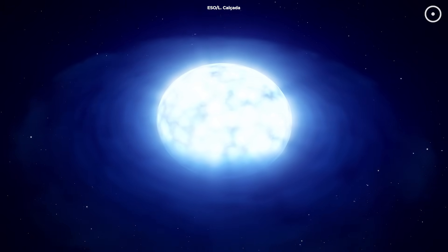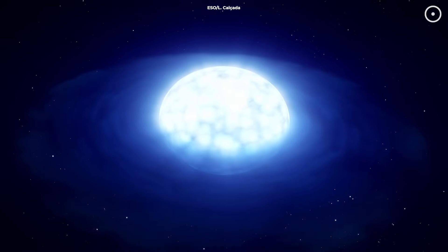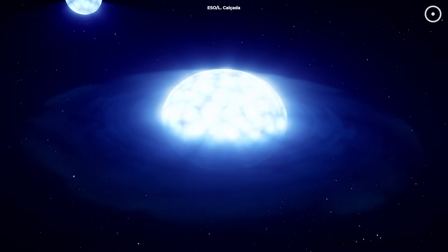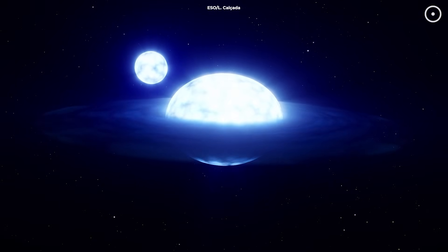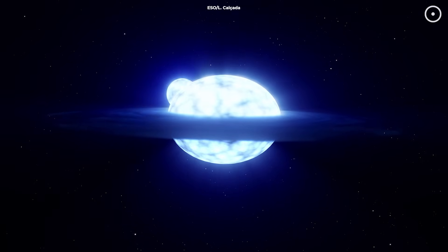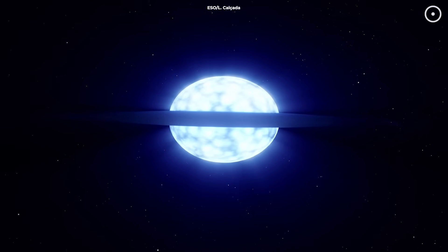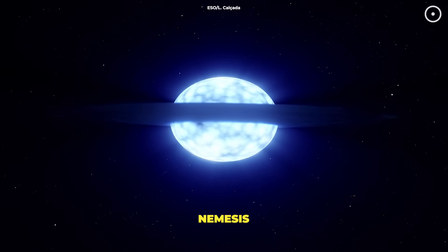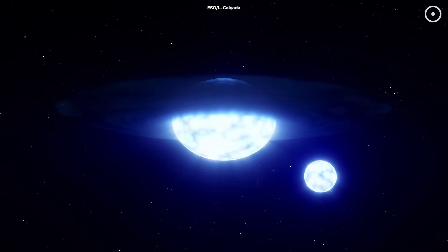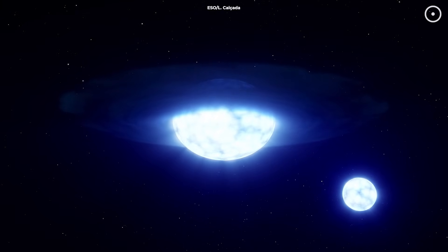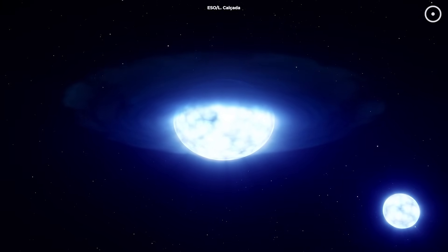Our own solar system might have been a binary system. Scientists have found some clues that a second star might have once orbited alongside our sun during its formation. This mysterious companion, which astronomers nicknamed Nemesis, might have drifted away billions of years ago. If it had stayed, our entire evolutionary history would be completely different.